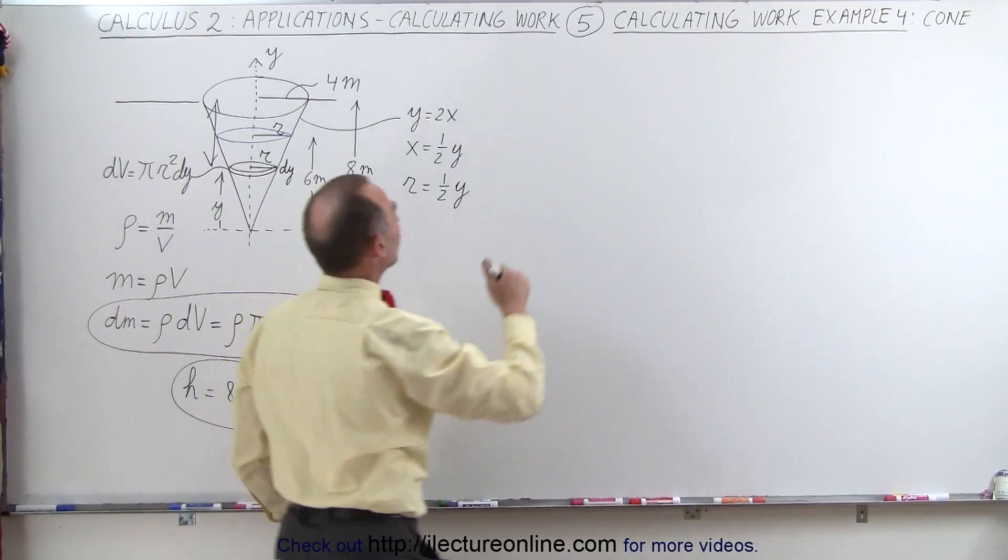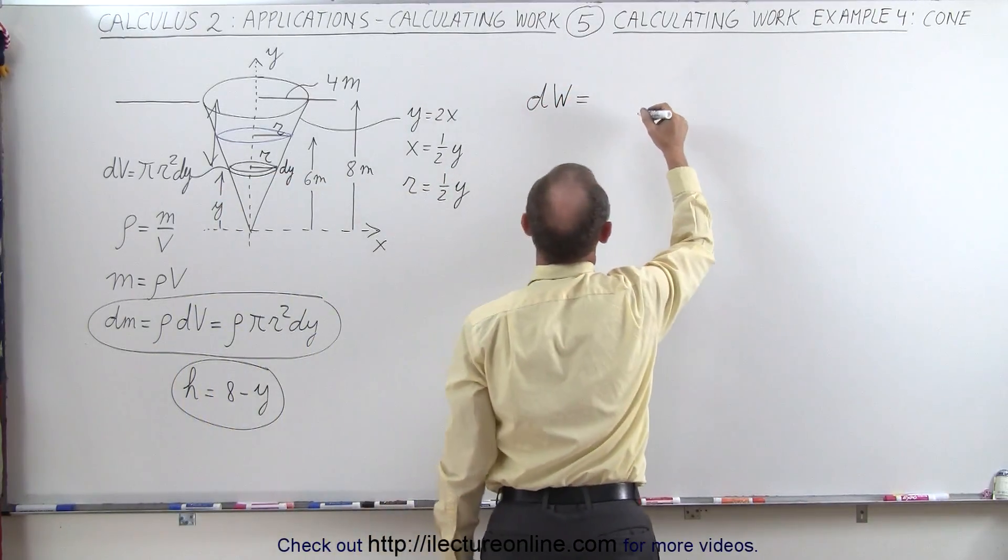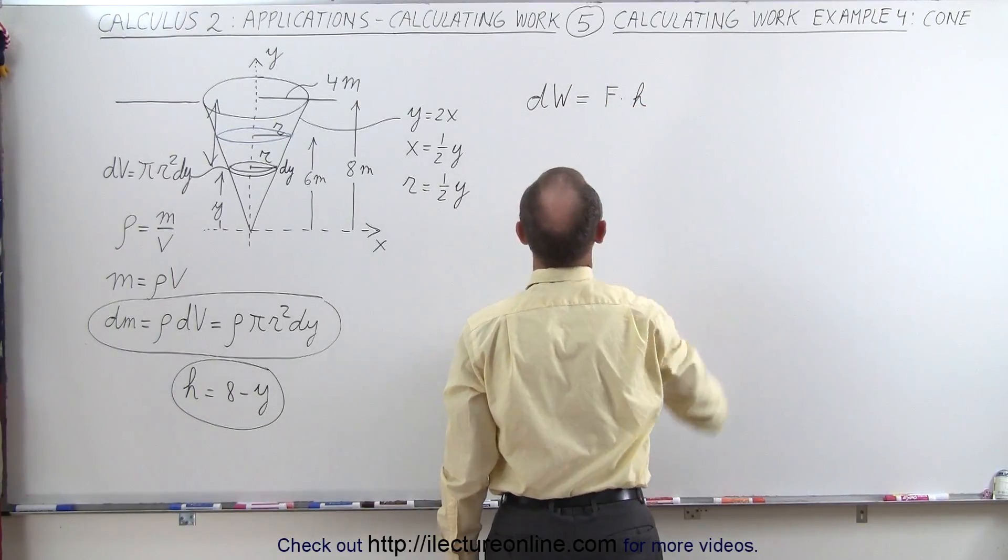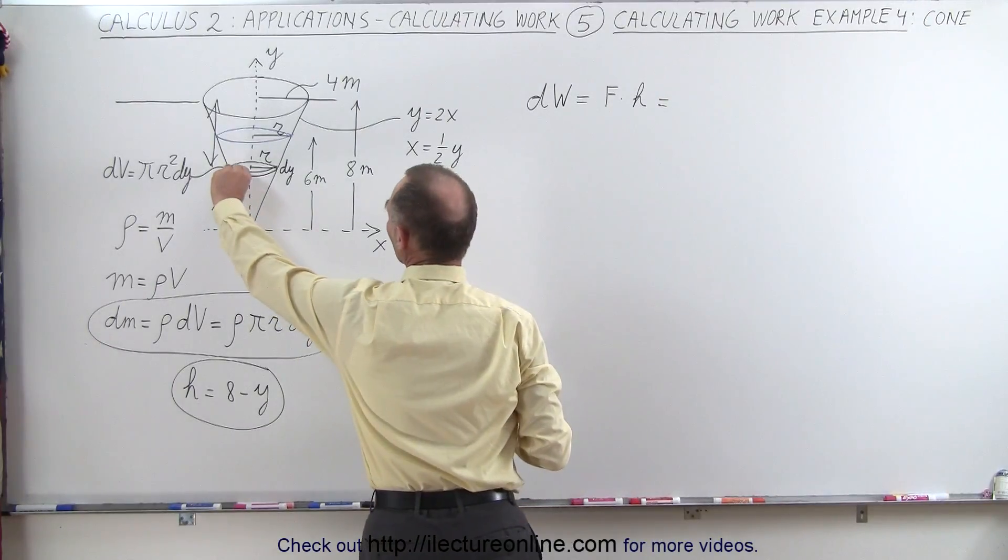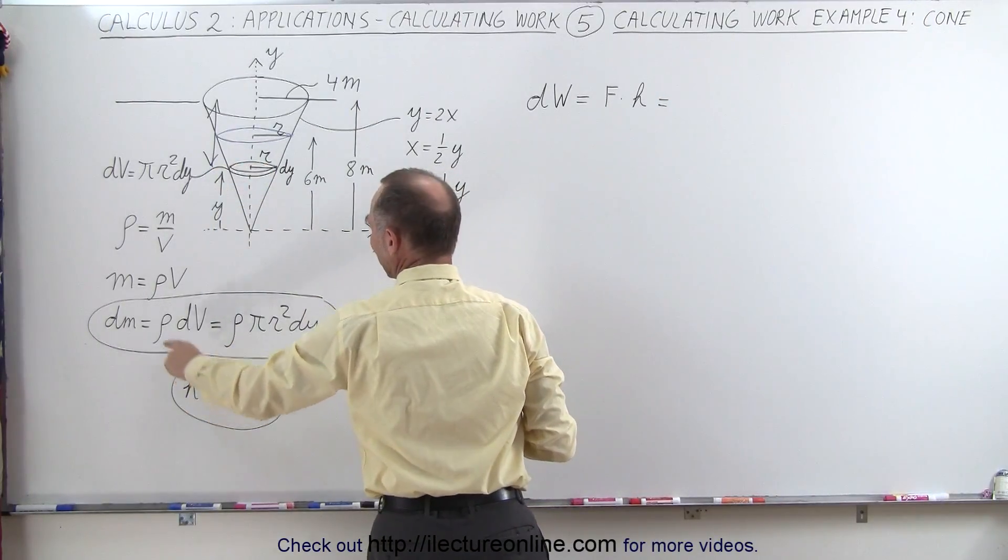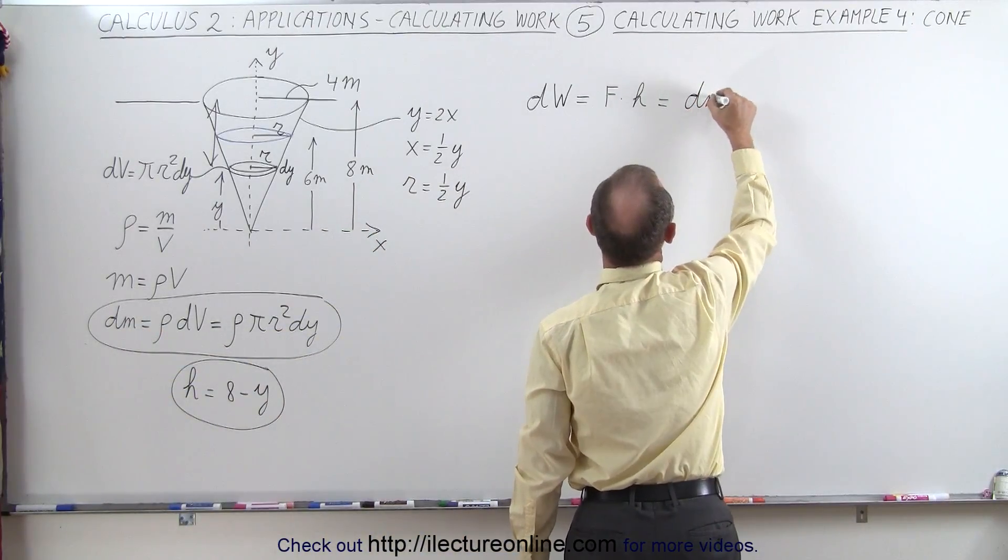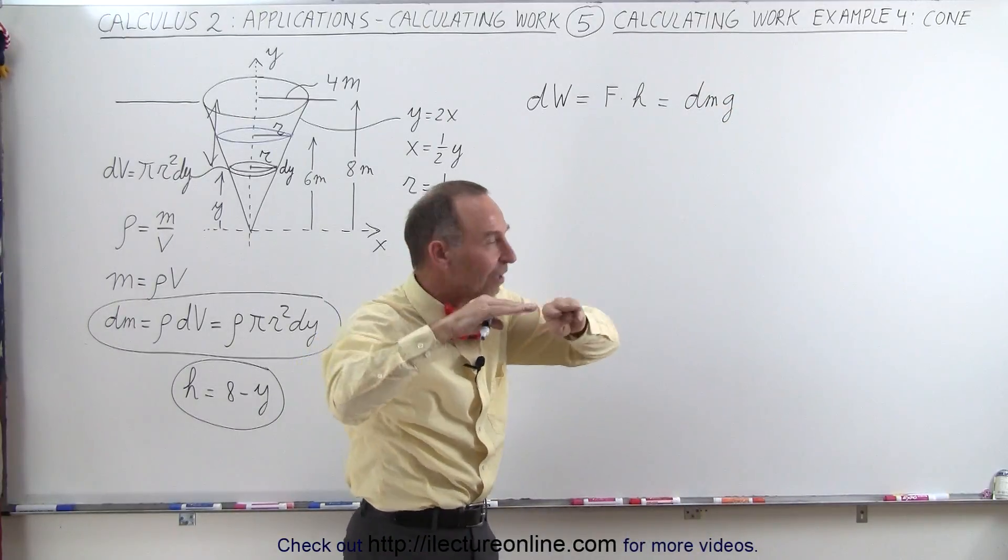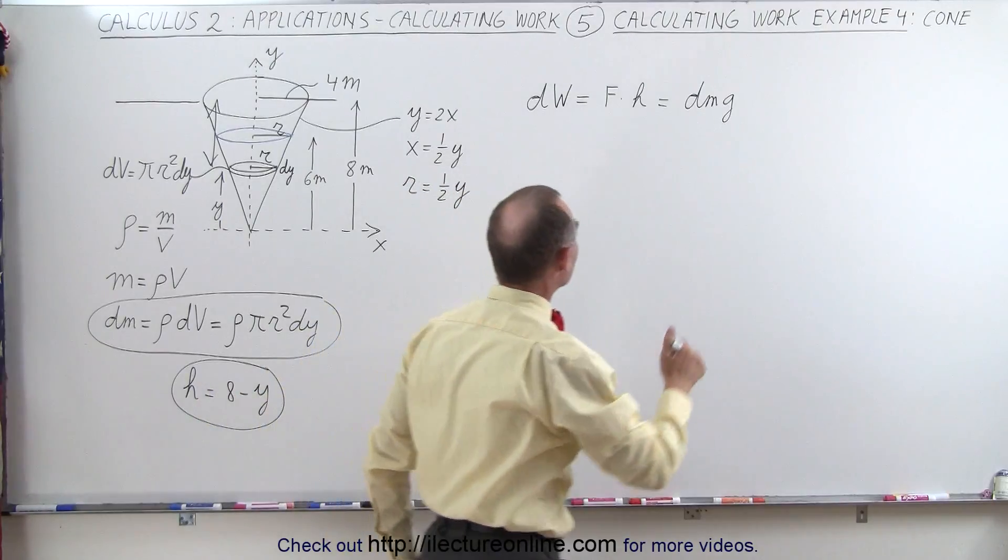So now what we're going to do is calculate the amount of work done for a small little slice, which is equal to the force applied times the height through which we have to lift it. So in this case, that's going to be equal to the weight of this little slice. The weight is the mass times acceleration due to gravity. So that's dm times g. This represents the weight of a small little slice of water that we have to lift through a distance h, and h is 8 minus y.